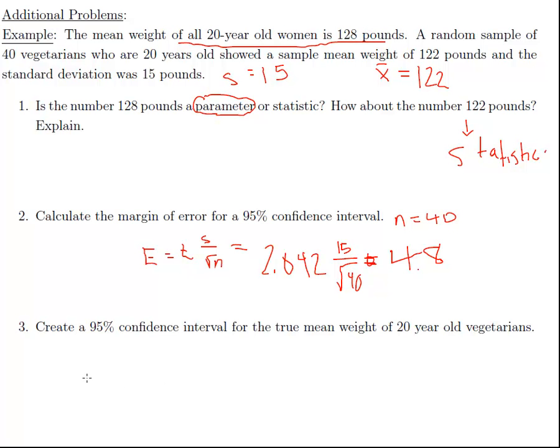That's the margin of error. Now we can easily calculate the confidence interval. We would take x-bar plus or minus this formula here, since that's our margin of error. X-bar is 122 plus or minus 4.8. So 117.2 for our lower bound and 126.8 for our upper bound. So 117.2 comma 126.8, or 117.2 up to 126.8 for the confidence interval.